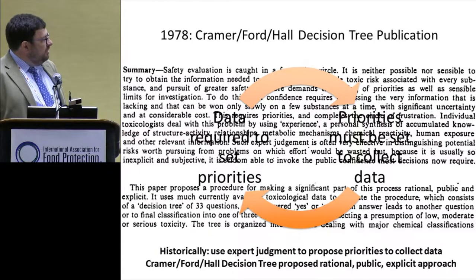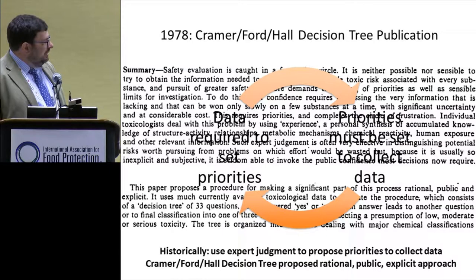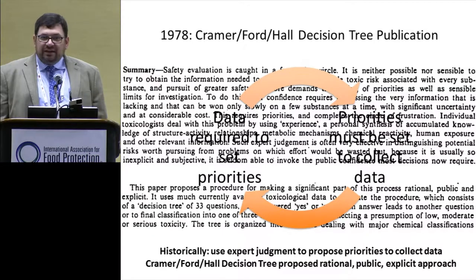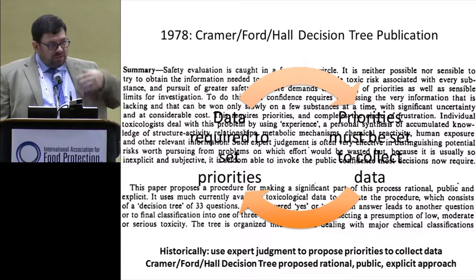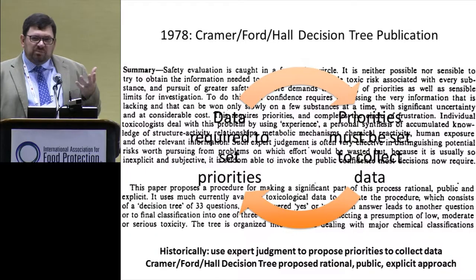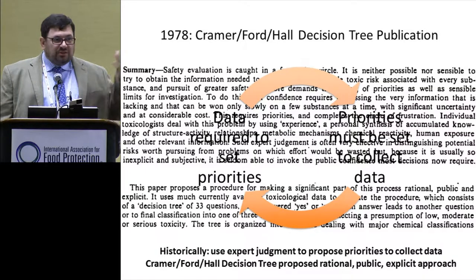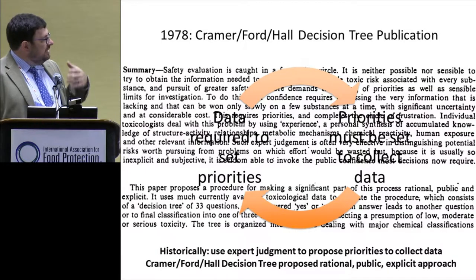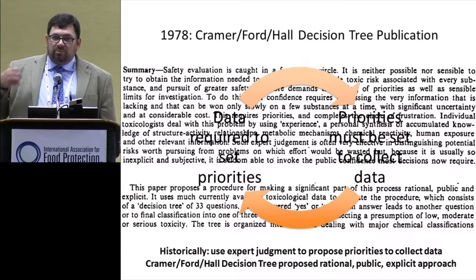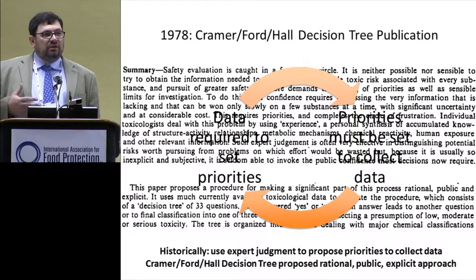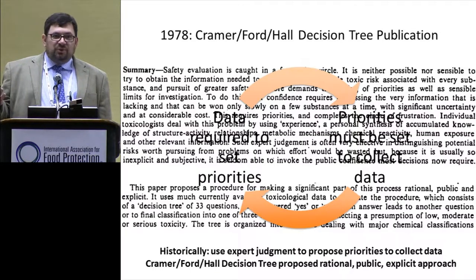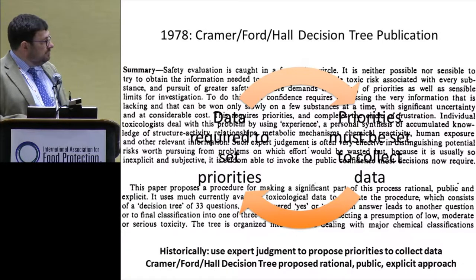As an alternative, instead of just relying purely on expert judgment with learned academics saying this is probably a substance we have to worry about, the Cramer-Fort Hall Decision Tree said: let's develop a decision tree. We'll make it public, it'll be very clear, very explicit about what the limitations are, and we'll use that to identify what the priority-setting standards should be for testing of materials.